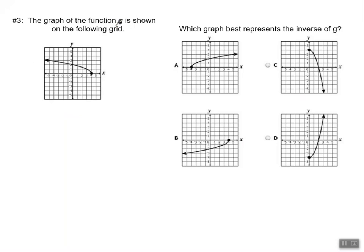Let's look at our final example. The graph of the function g is shown on the following graph. So here is the graph of g. It looks like a square root function. Which graph best represents the inverse of g. So we're looking for the inverse. Well, I think the easiest way to attack this is using that tip. If we know one of the points, and I know one of the points. It's right there. That's the point 4, 0.